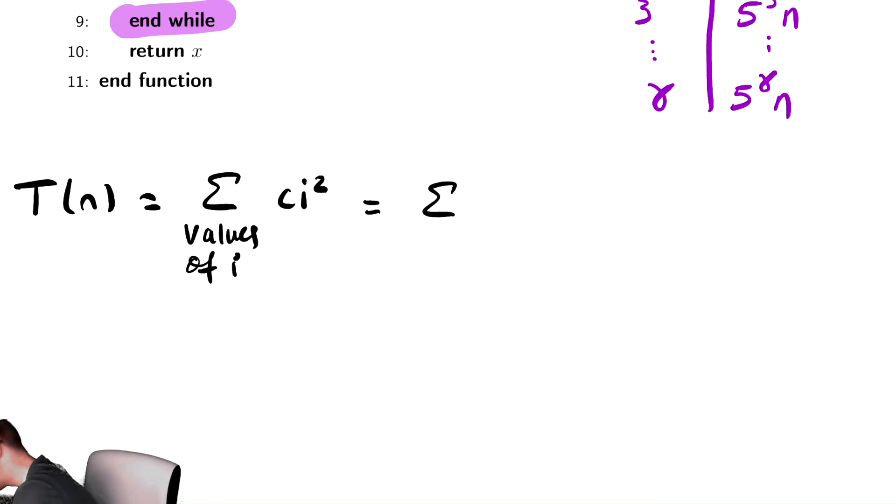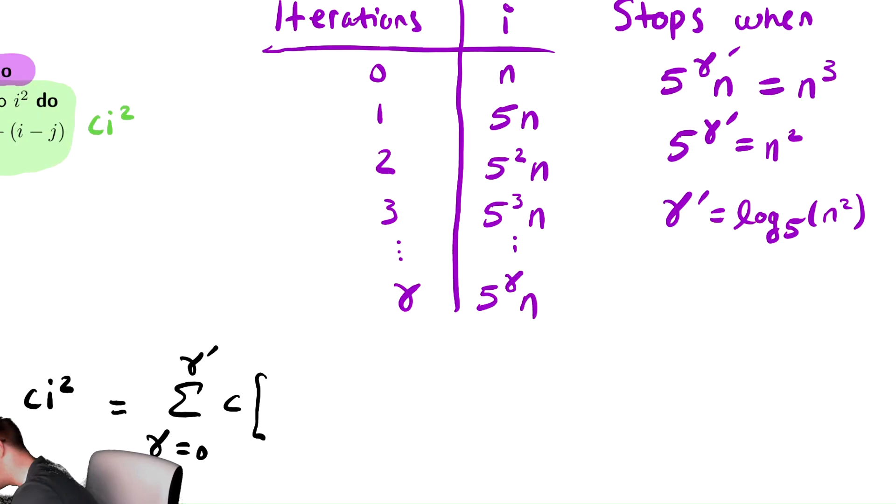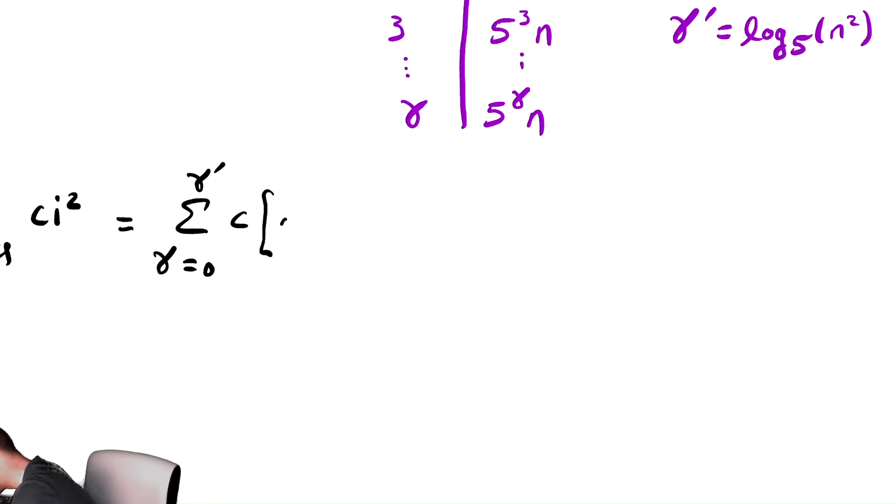So t of n is equal to the sum over the values of i of the cost of the body of the while loop, in this case that being ci squared. And now we've recontextualized that sum as a sum over gamma going from gamma equals zero to gamma prime, of ci squared, but i in terms of gamma is 5 to the gamma times n. So we replace i with 5 to the gamma times n, and then that gets squared. Notice we replace i with that expression.